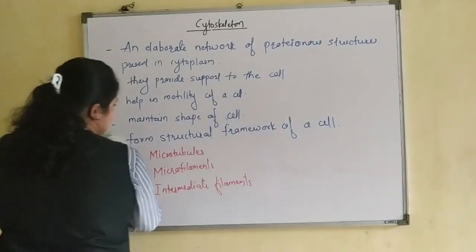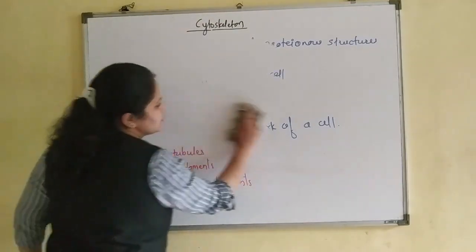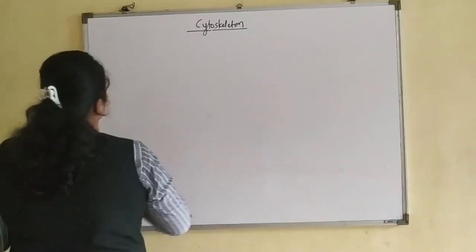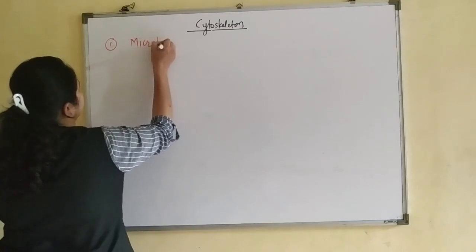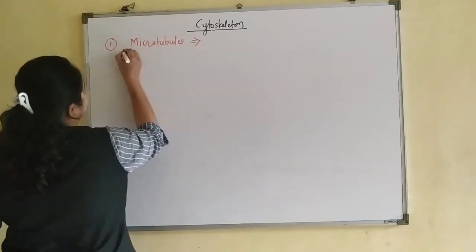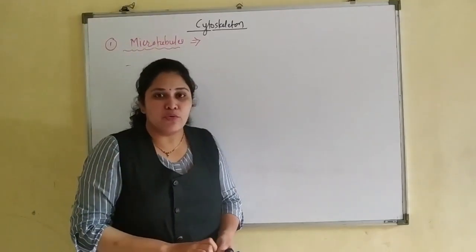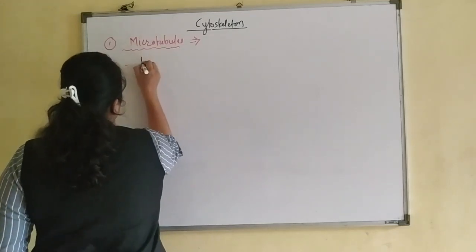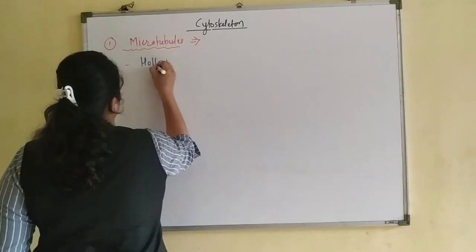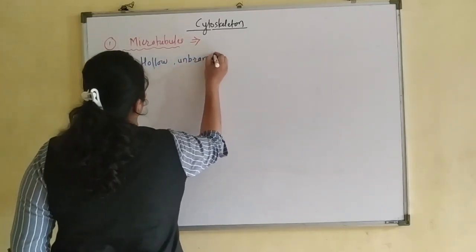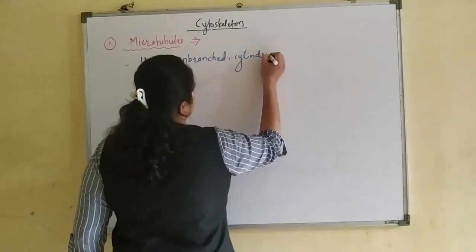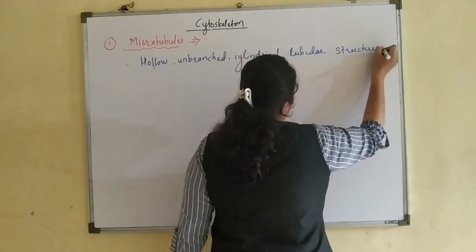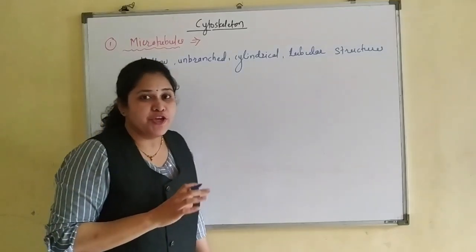Let's start the first one: microtubules. These microtubules are unbranched, hollow, cylindrical tubular structures present in the cytoplasmic matrix of eukaryotic cells.